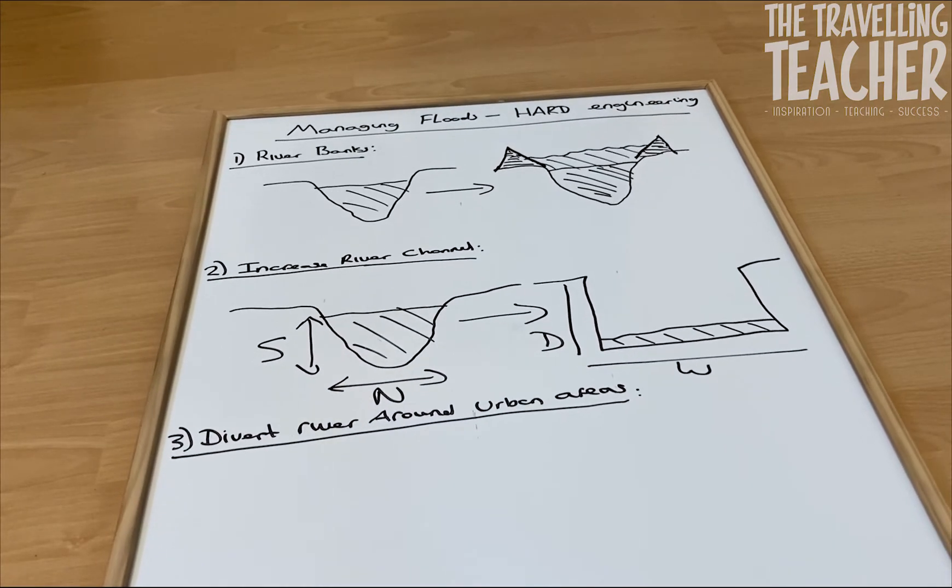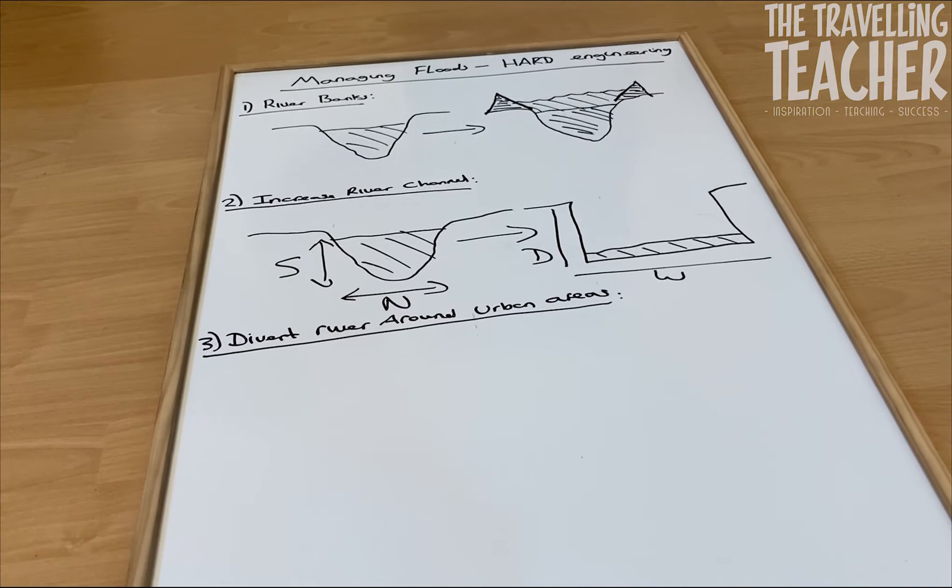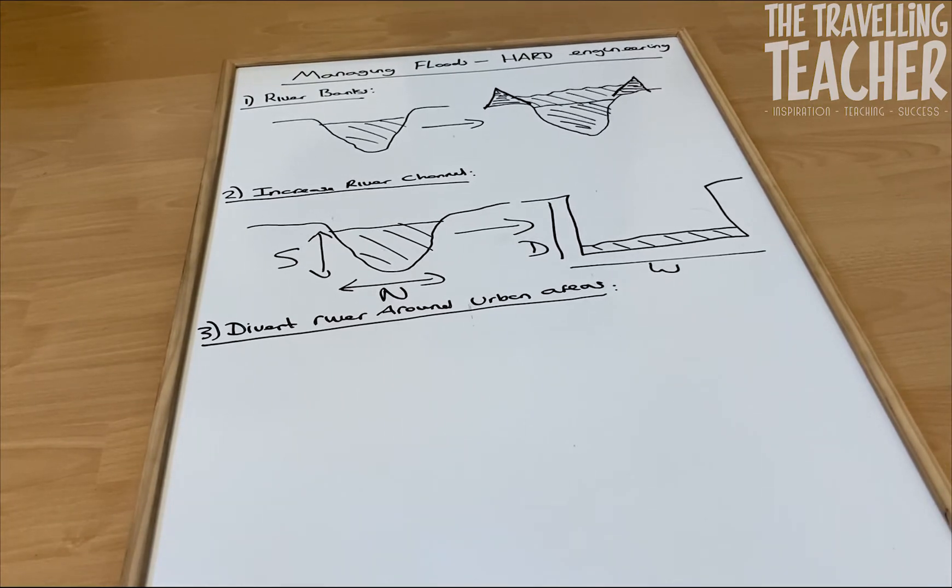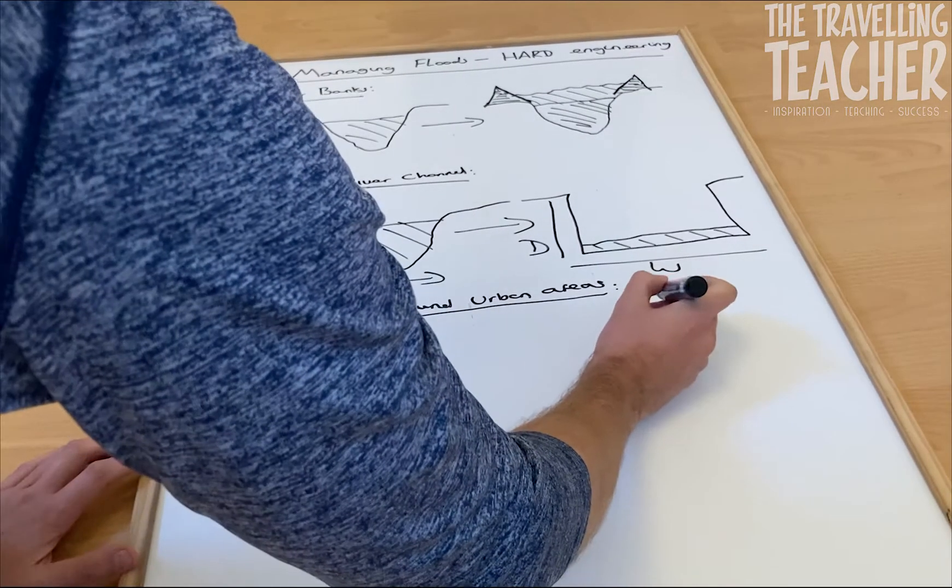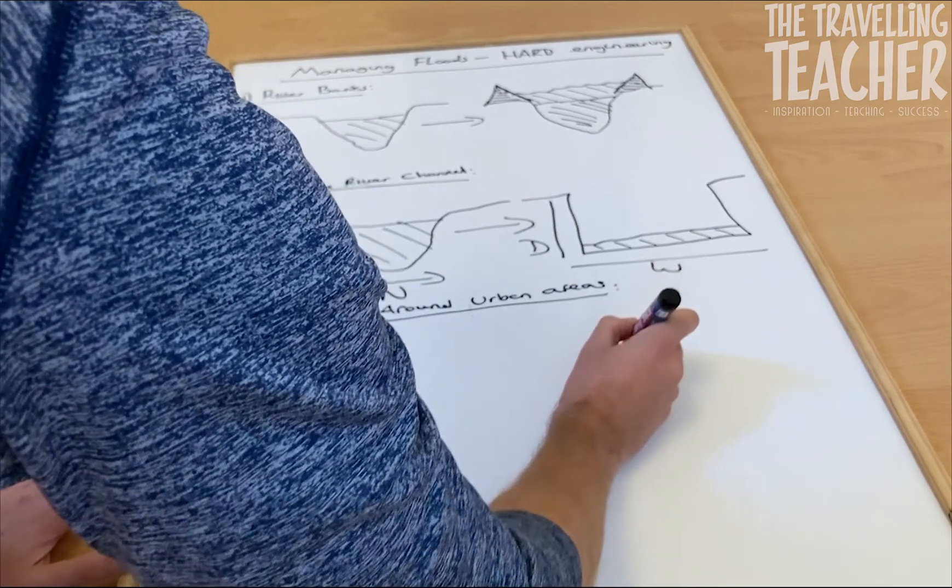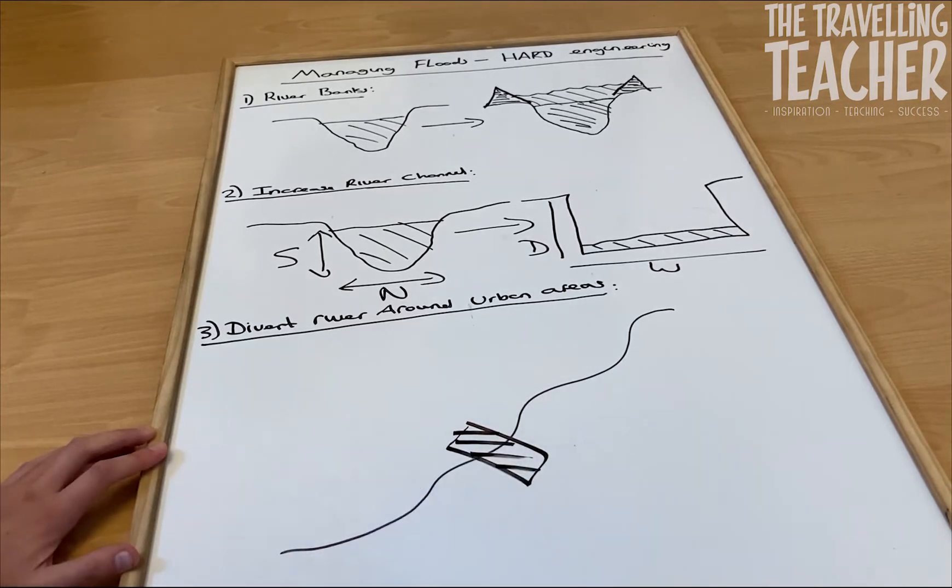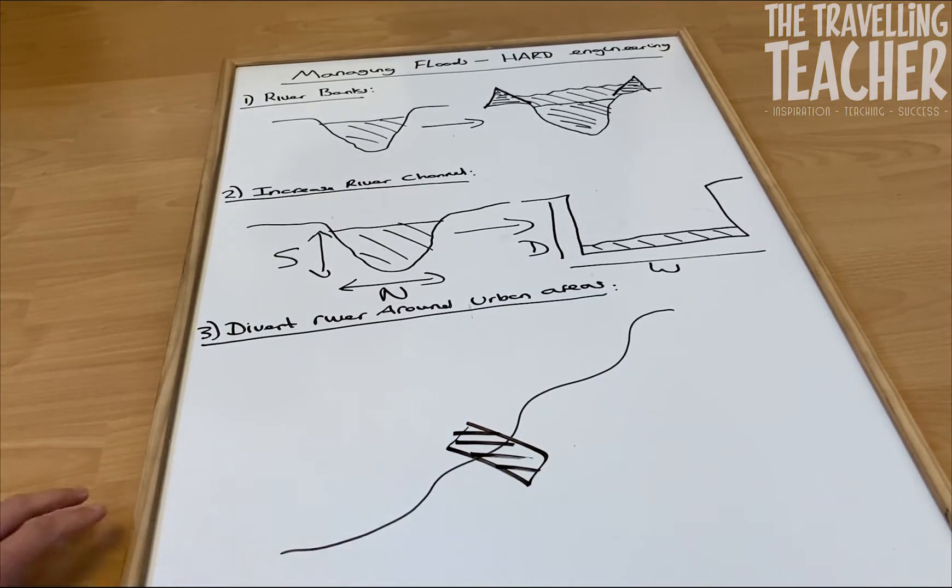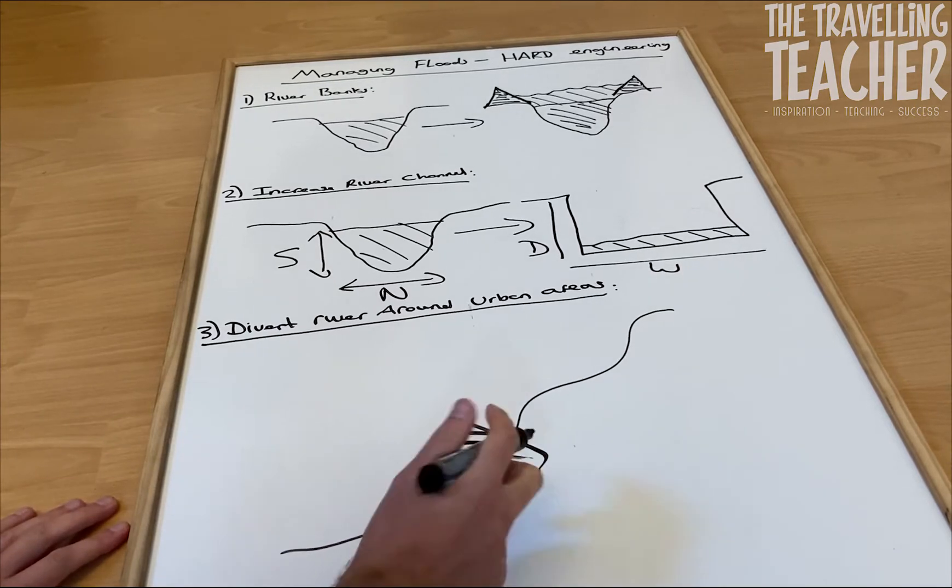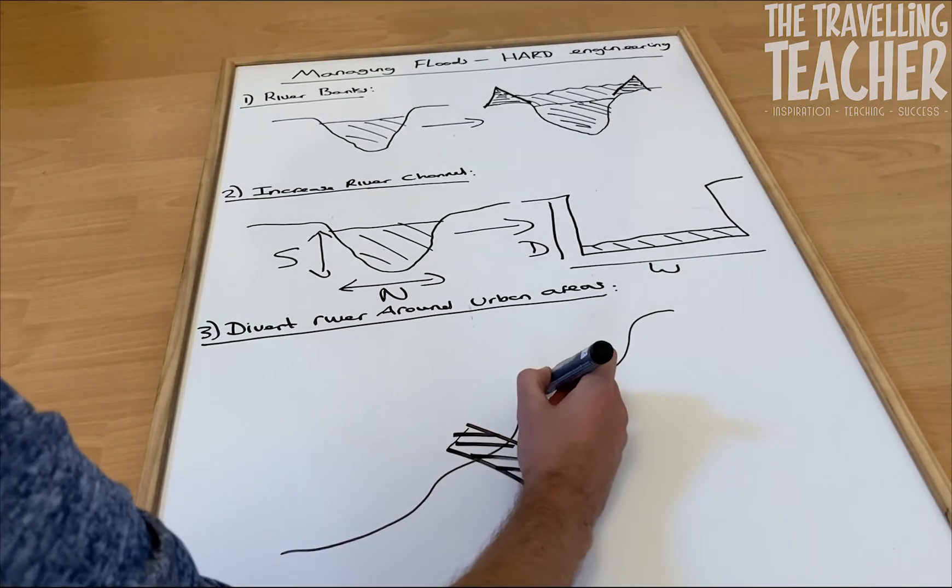Number three, I'm just going to move the whiteboard up slightly. There we go. Is diverting the river around urban areas. So let's say that's our river. And let's say right there we have an urban area, a city.